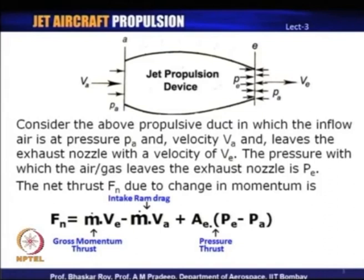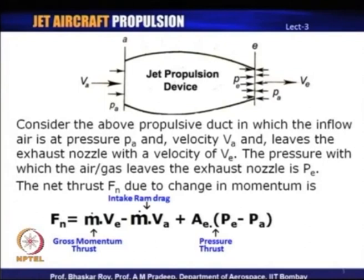This differential pressure creates the third term. When P_e equals P_a, the third term is zero — meaning no pressure thrust, only momentum thrust. We then have just two terms: the gross momentum thrust due to Newton's third law as a reaction to the exhaust jet, and the intake ram drag due to flow coming into the propulsion device. Together these three components are referred to as net thrust, written simply as F_n.